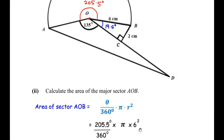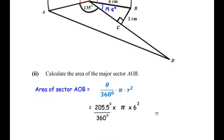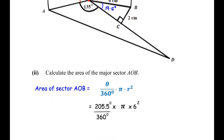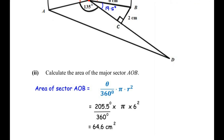Substituting the values: 205.5 divided by 360, times pi, times 6 squared. Checking in the calculator gives 64.559, and rounding to one decimal place we get 64.6 centimeters squared. This is the area of sector AOB.